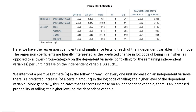Here we have the regression coefficients and significance tests for each of the independent variables in the model. The regression coefficients are interpreted as the predicted change in log odds of being in a higher as opposed to a lower category on the dependent variable per unit increase on the independent variable. A positive estimate means that for every one unit increase on an independent variable, there is a predicted increase in the log odds of falling at a higher level on the dependent variable — indicating an increased probability of falling at a higher level as scores increase on an independent variable.